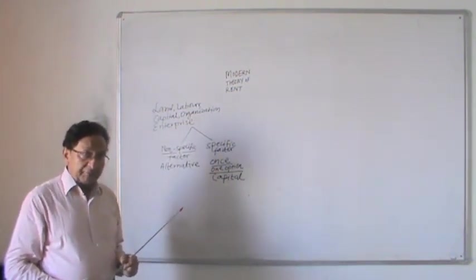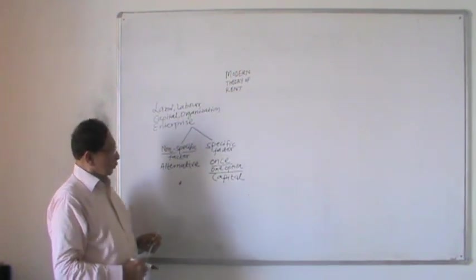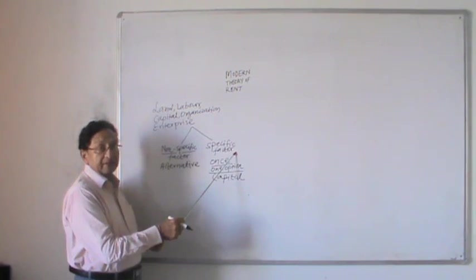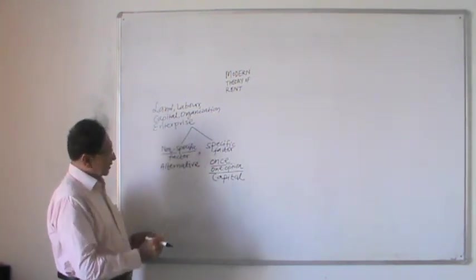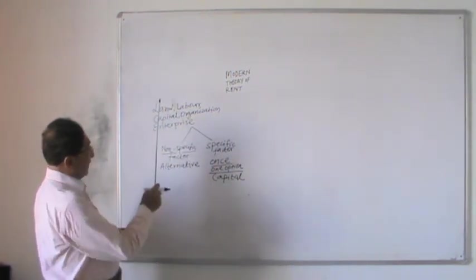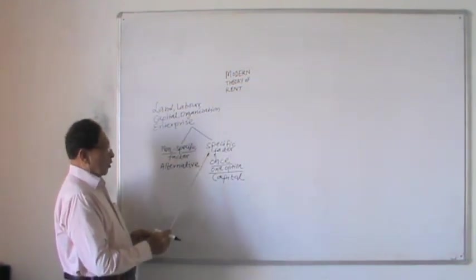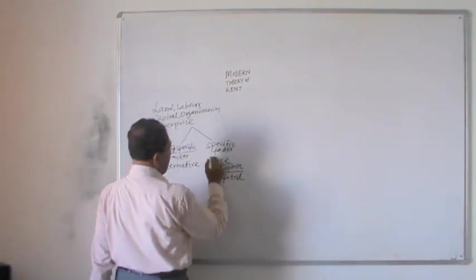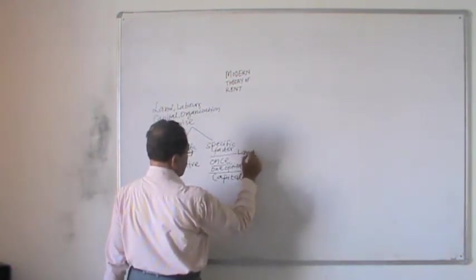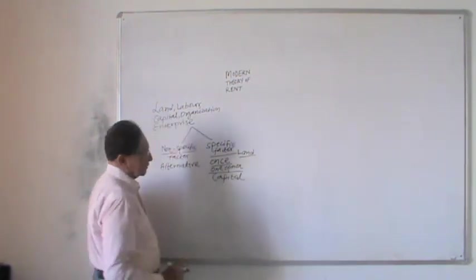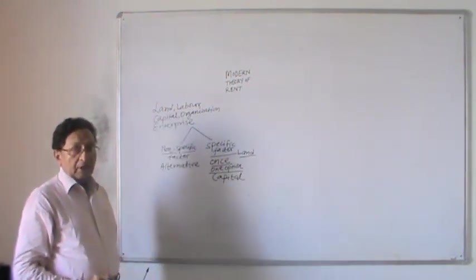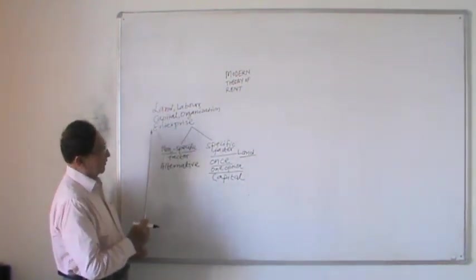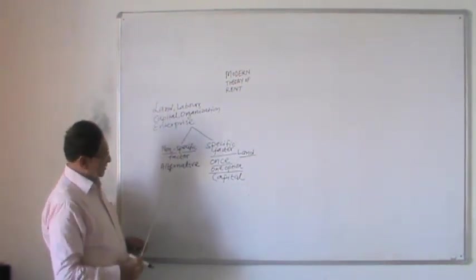An entrepreneur can consider setting up one industry or another — that enterprise is a non-specific factor. But if a businessman chooses a particular industry, it becomes a specific factor. Modern theory says that all specific factors are considered as land, and this land element may be available in all these factors.